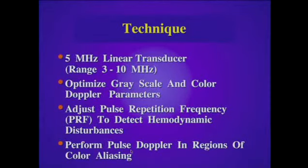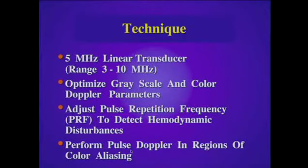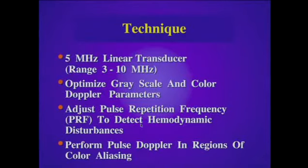We'll optimize the grayscale and color Doppler parameters for each individual patient and adjust the pulse repetition frequency so that we will detect hemodynamic disturbances in areas of flow abnormality. It is important to adjust the PRF for each patient so that we do not see aliasing in areas of normal flow. We will then perform pulse Doppler examination in regions of abnormal flow or color aliasing to determine the peak systolic velocity and accurately characterize lesions identified on our examination.